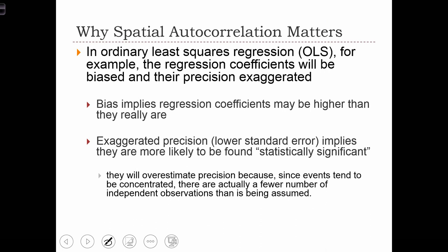In a technique called ordinary least squares regression, we compute a statistic called a regression coefficient. When we violate the independence assumption — in other words, when there's spatial autocorrelation in our data set — we know that our statistics, the regression coefficients, will be biased and their precision will be exaggerated. Bias implies that the regression coefficients we estimate may be higher than they really are in the population, so we are systematically going to overestimate the regression coefficient when there's spatial autocorrelation.